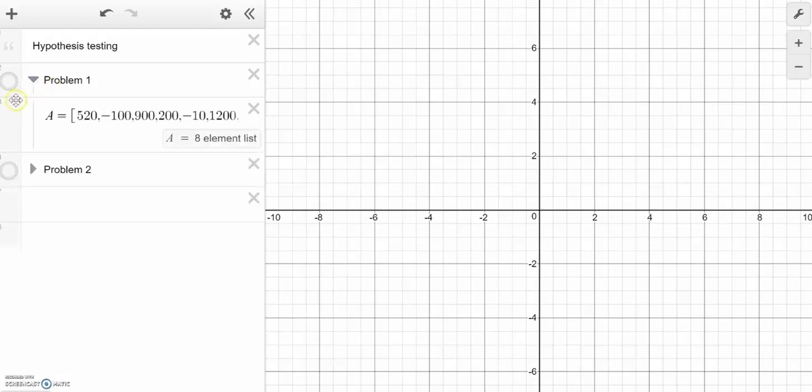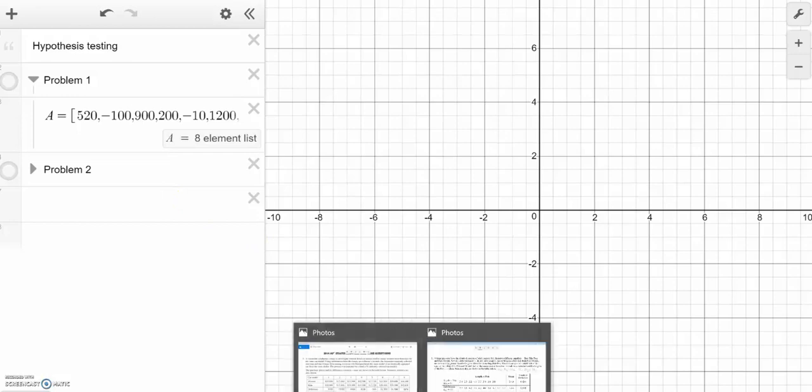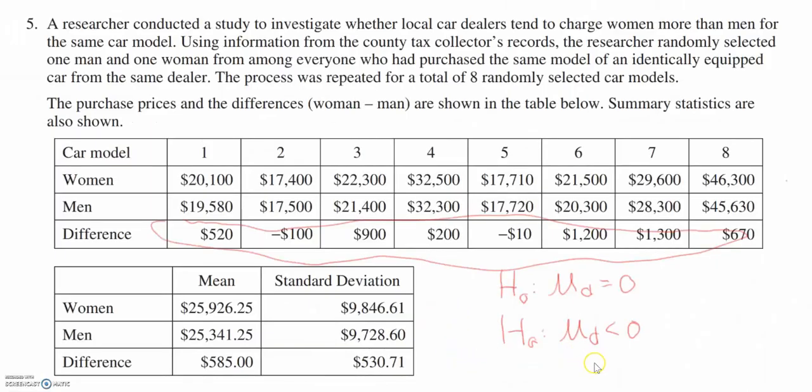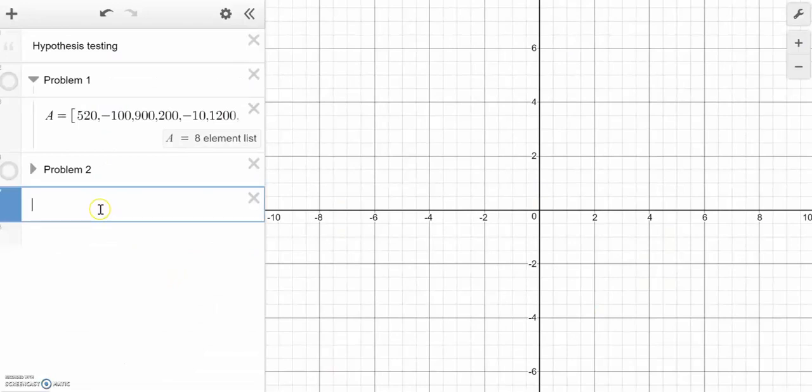So let's walk over to Desmos here. Step one is I have to put the differences into Desmos, and I've done that already. I have all eight differences here. And keep in mind, going back to the problem that I'm doing a one-tail test and how the problem is written, I am looking to prove that the difference is less than zero.